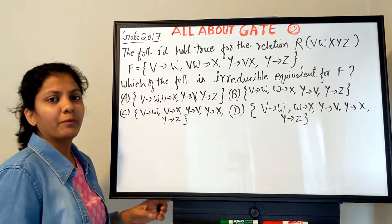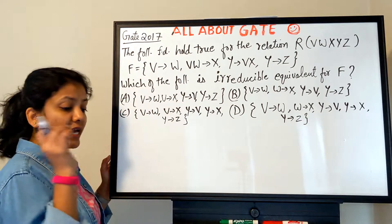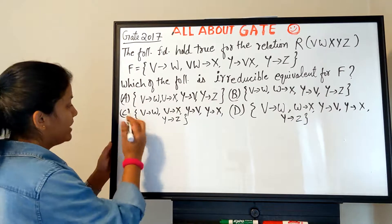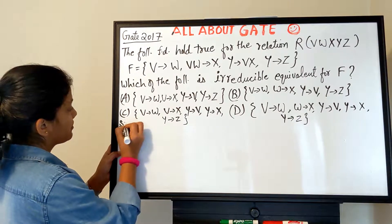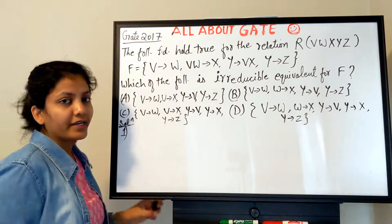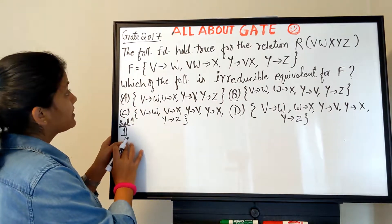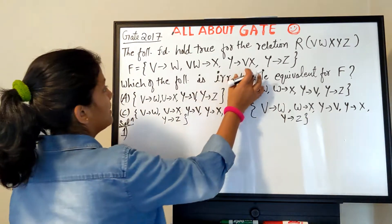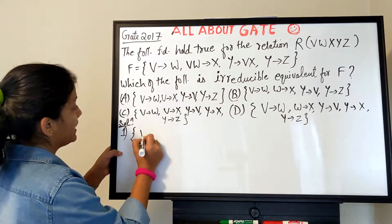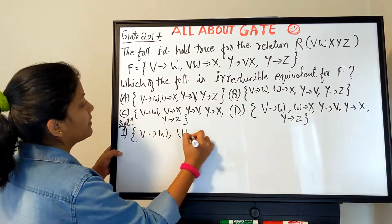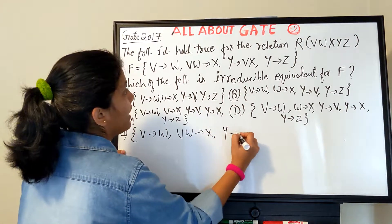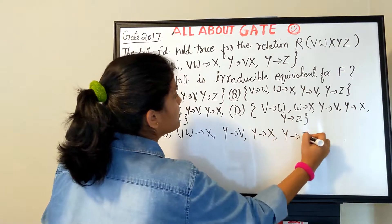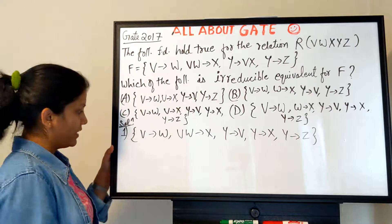Forget about the four options for now — let's go step by step, which is the easiest way to get to the right answer. Step number one: we have to singletonize the RHS — make each right-hand side a single attribute. So it becomes V→W, VW→X, and the AY→BX splits into Y→V, Y→X, and Y→Z. Step one is complete.